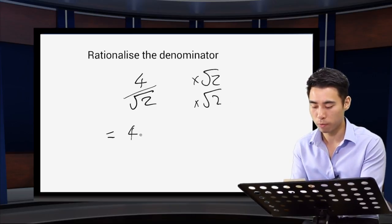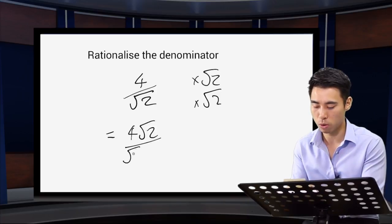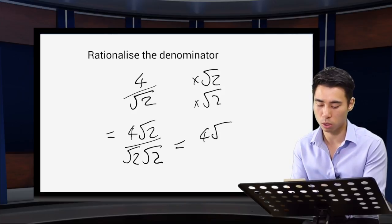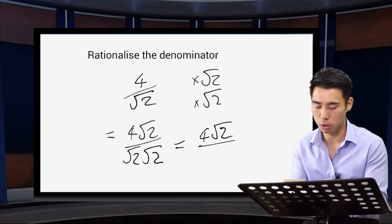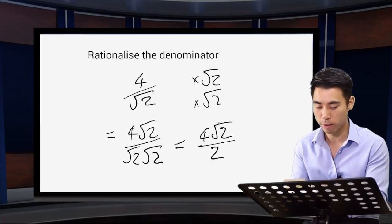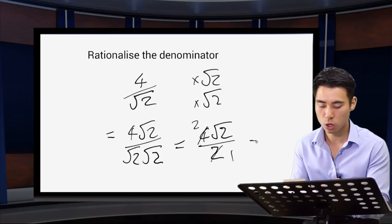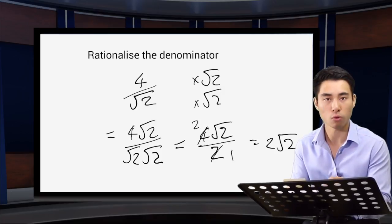What are we left with? 4 root 2 on the top, and on the bottom root 2 times root 2, which is 2. So we have 4 root 2 all over 2. We can cancel: 2 goes into 4, giving 2 root 2 over 1, or our final answer, 2 root 2.